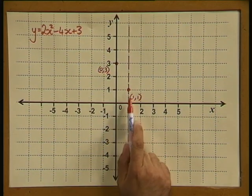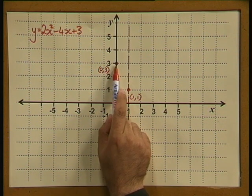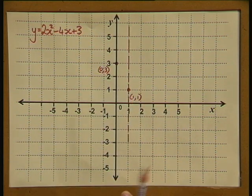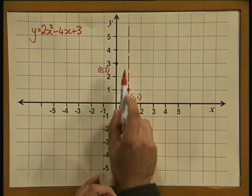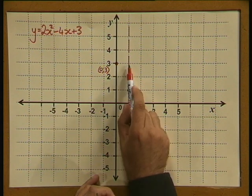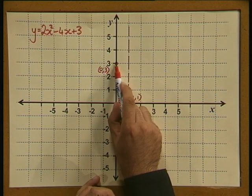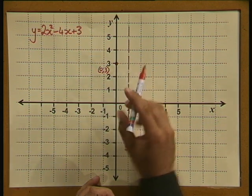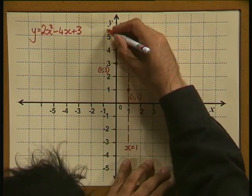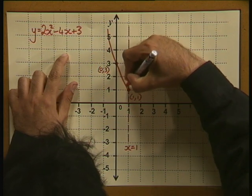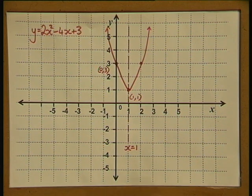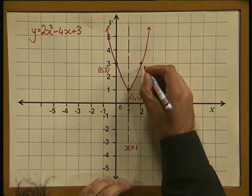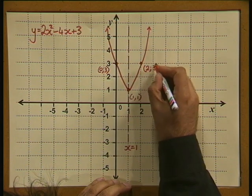Let's use the line of symmetry to complete the parabola. We have the turning point (1, 1) and the y-intercept (0, 3). The equation of the line of symmetry is x equals 1. From the line of symmetry to the y-intercept is one unit, so using the mirror image on the other side, one unit from the line of symmetry generates another point. We can now complete our parabola. It is cup-like with a minimum value, and that mirrored point has coordinates (2, 3).